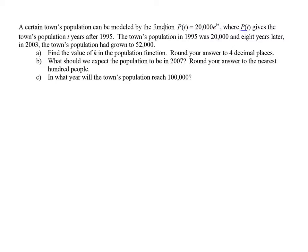In order to find this value, we need to use the function that we already have, P(t) equals 20,000 e to the kt. We need some information for this equation, and that will come from what happened eight years later, when the population was 52,000.